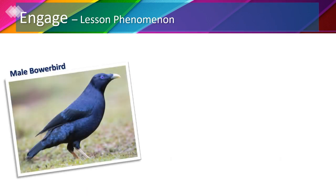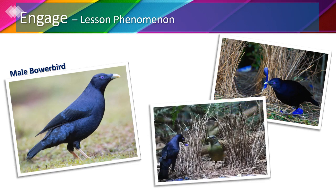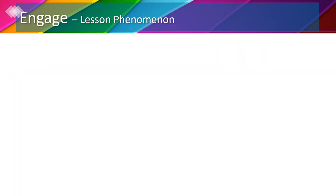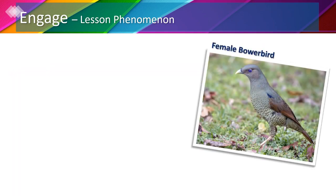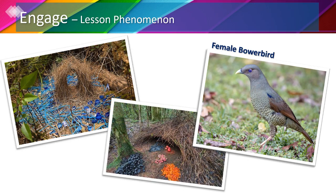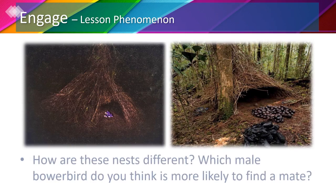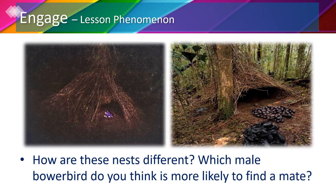Bowerbirds are most known for their unique wooing behavior, where males build a nest and decorate it with sticks and brightly colored objects in order to attract a female bowerbird for the purpose of reproduction. Female bowerbirds love decorations, especially blue ones, so males decorate their nests with colorful things they find around to attract females. The more decorated the nest, the better chances they get of wooing. Can you tell how the two nests are different and which male bowerbird is more likely to find a mate?